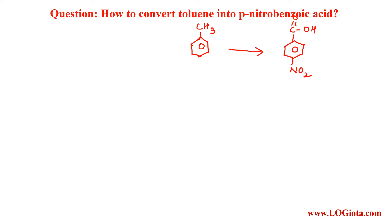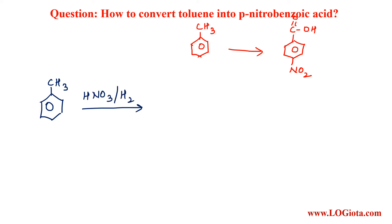We will start with toluene. First, we will do nitration because in the product we can see that a nitro group is present. For that we will add HNO3 with concentrated H2SO4. With this reaction, nitration of toluene will take place at the ortho as well as para positions. Since in the product we need the nitro group at the para position, we will show only the para product.